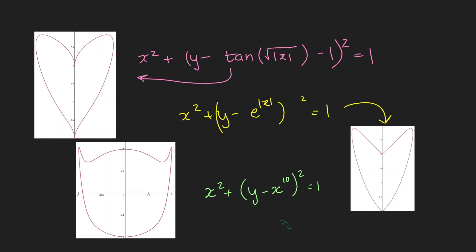OK, so here's just a few examples of some of the graphs you get just by perturbing the function next to y. So if I make it tan of the square root of the absolute value of x in there, you get this heart pretty similar. If you change the tan for e to the absolute value of x, you still kind of get this heart-ish shape.